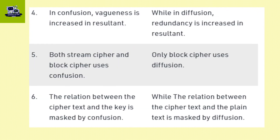In confusion, vagueness is increased in the resultant ciphertext. While in diffusion, redundancy is increased in the resultant. Confusion is used in both stream cipher and block cipher, while diffusion is used in block cipher only.